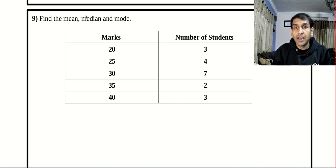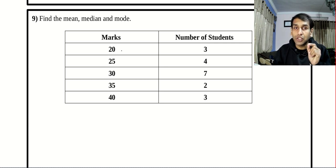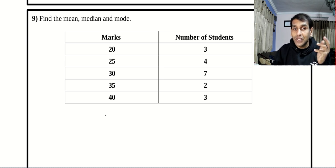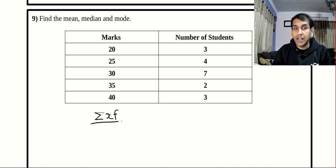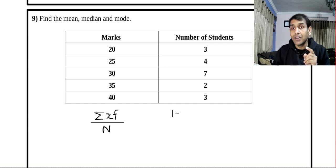For finding the mean, let's go through the formula method. You have to find the sum of all the numbers. Instead of writing 20 plus 20 plus 20, I can simply say 20 multiplied by 3. The formula goes like: summation of x values multiplied by frequency, divided by total number of frequencies. It's the same thing as in type 1. You can use your calculator, but put your calculator into one variable, not two variables.